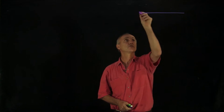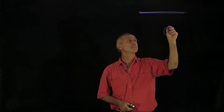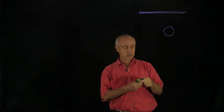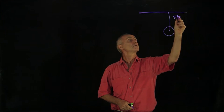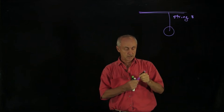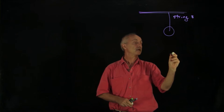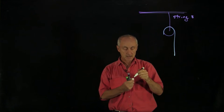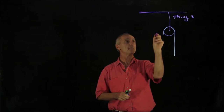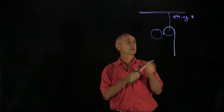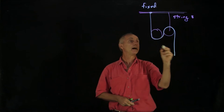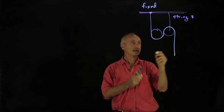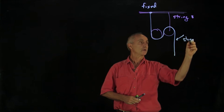Let's consider what we call the window washer problem. Suspended from the ceiling is a pulley, suspended by a rope we'll call string three. A rope wraps around this pulley, then around another pulley, and is fixed to the ceiling. This is what we'll call string one.